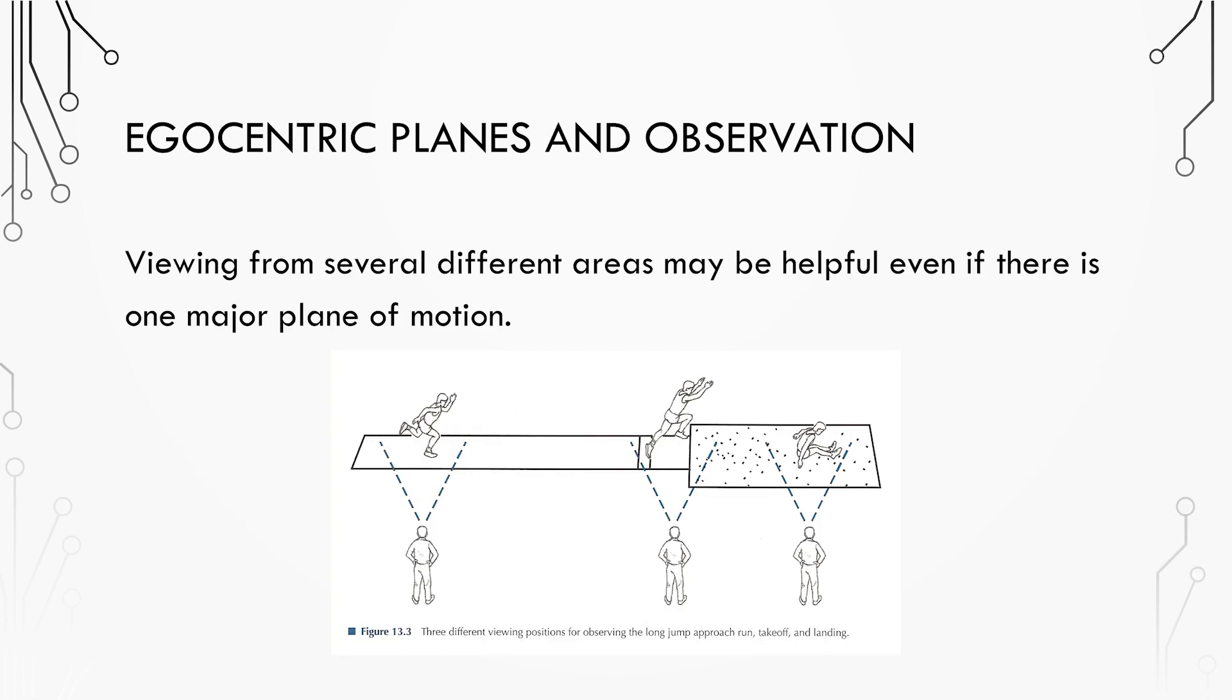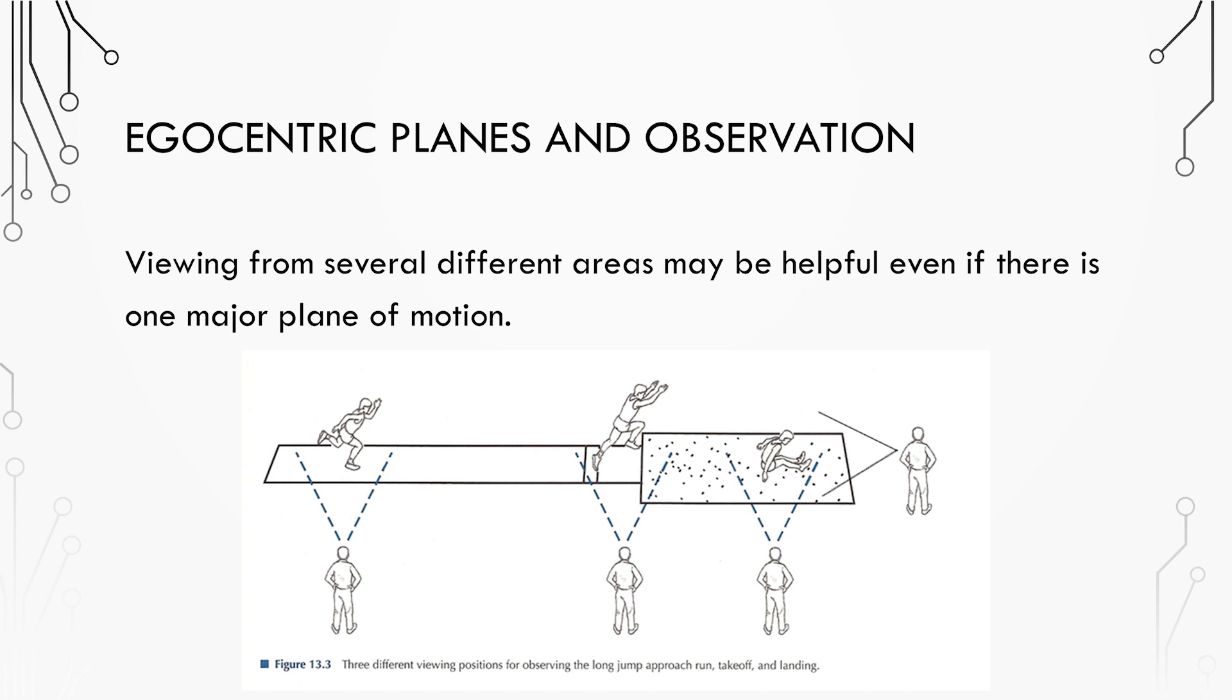Think of a skill that has movements in multiple planes. For example, the long jump has a run-up, take-off, and landing. We want to make sure that we're viewing all the critical movements in each plane. We might need to set up multiple cameras in the sagittal plane to capture the run-up, take-off, flight, and landing, but only require a single camera in the frontal plane as we can see the entire flight phase and landing.